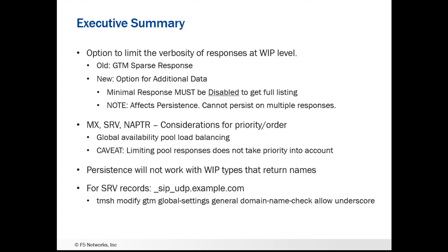Persistence will not work for wide IP types that return names. So for example, if you look up an MX record and multiple MX records are returned, GTM is not going to be able to use those in persistence. That's another reason why you'd want global availability, or maybe topology, to pin things so they always come back to the same spot. For SRV records, the convention is to use underscores in the names. By default, that's not enabled on the GTM, so you're going to need to modify the global settings for the domain check setting and allow underscores if you're setting something up that uses the SRV convention.